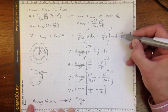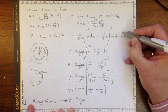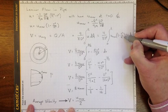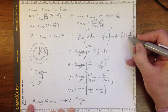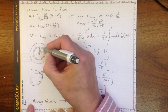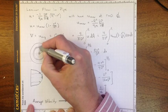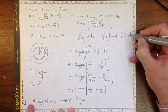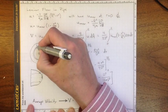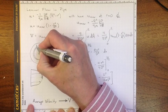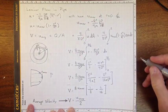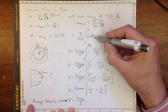So u_max, 1 minus r² over capital R², that's the velocity, 2πr, 2πr around that annular area, times dr, that distance in there, gives us the dA.